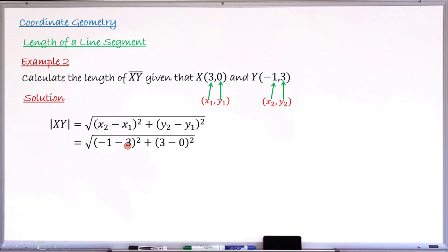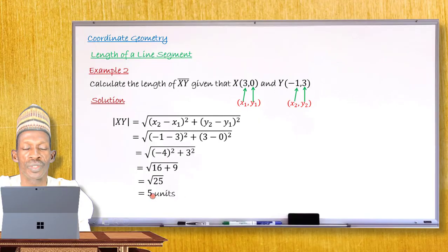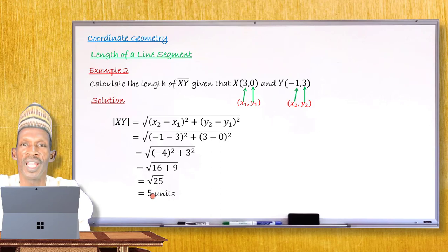Simplifying inside the brackets: −1 − 3 = −4 and 3 − 0 = 3. So we have √[(−4)² + 3²] = √(16 + 9) = √25 = 5. The length of line segment XY is 5 units. With these examples, I hope you can now find the length of a line segment when the coordinates of the endpoints are given.